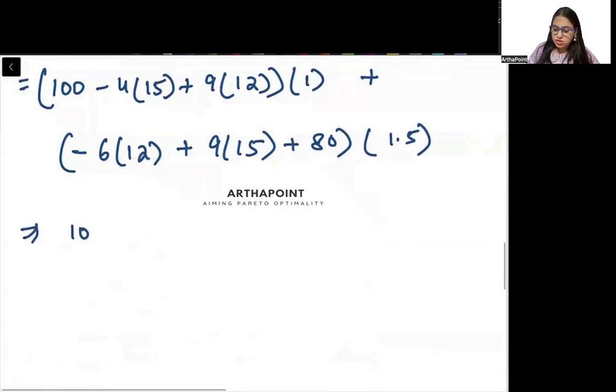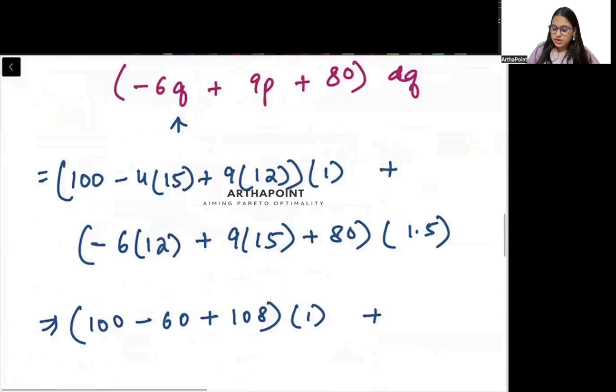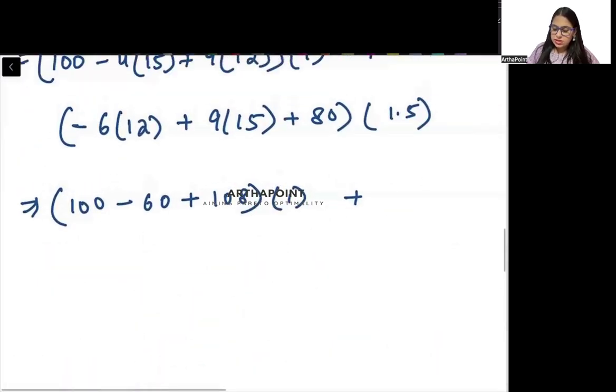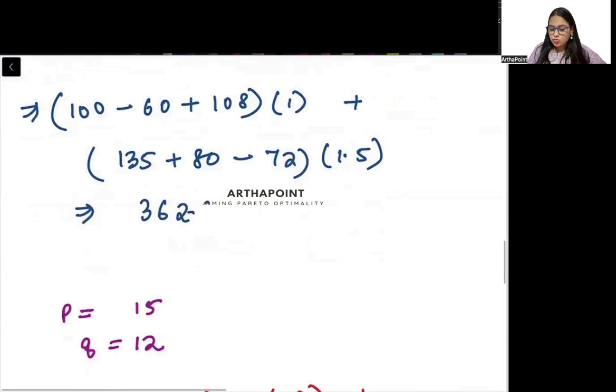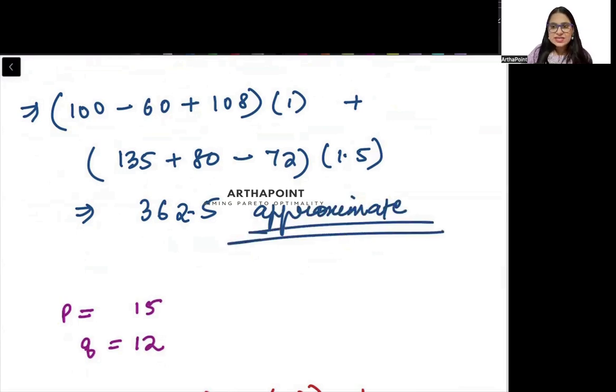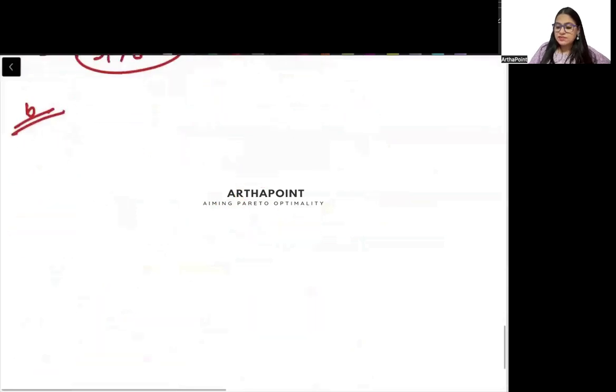When you solve this, you will get 362.5 approximately. This is an approximate change. Why is this approximate beta? We are calling this an approximate change because this is through the method of differentiation.